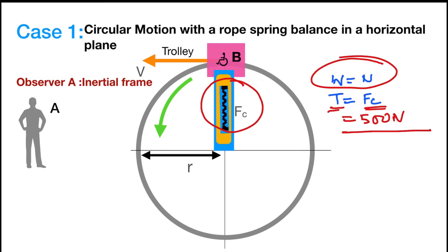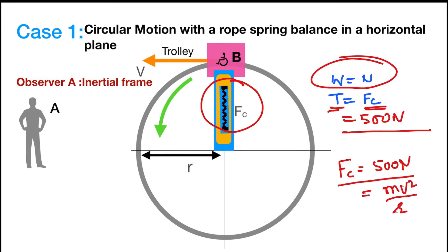For observer A, the trolley is moving in a circular path because of the centripetal force, which equals 500 N and is equal to mv²/r. This explains the situation as per Newton's second law of motion.